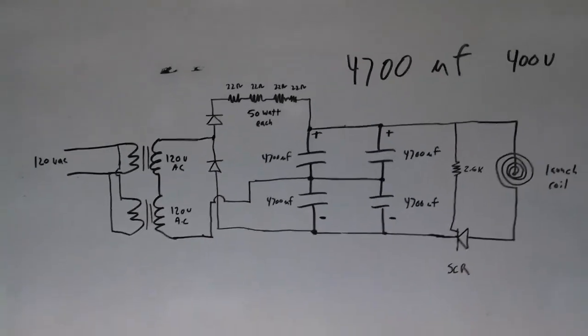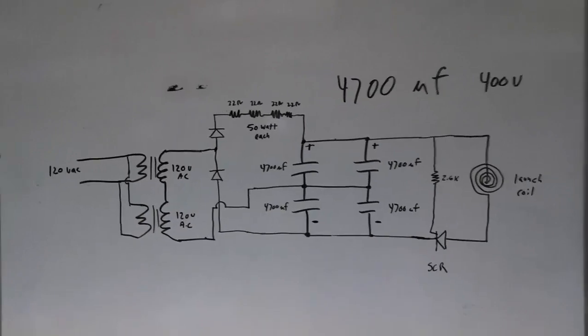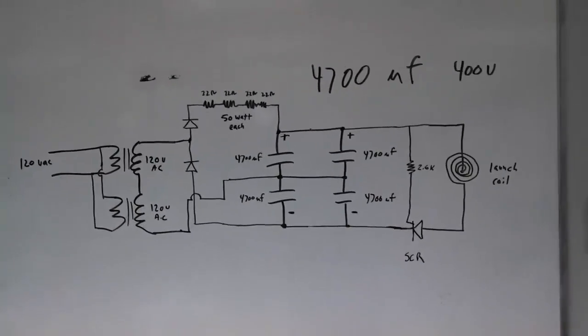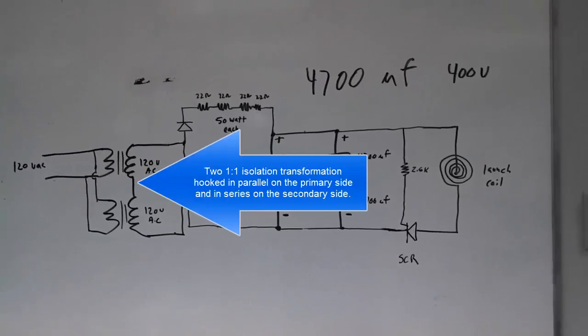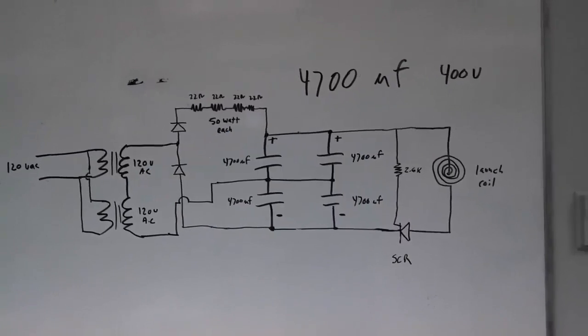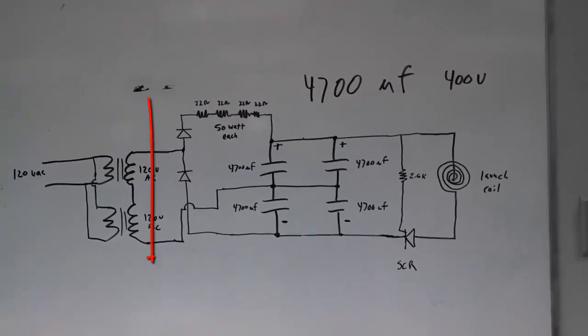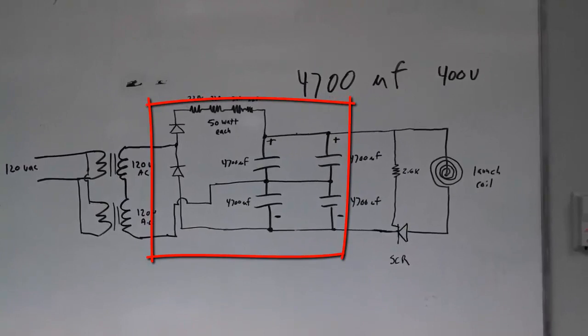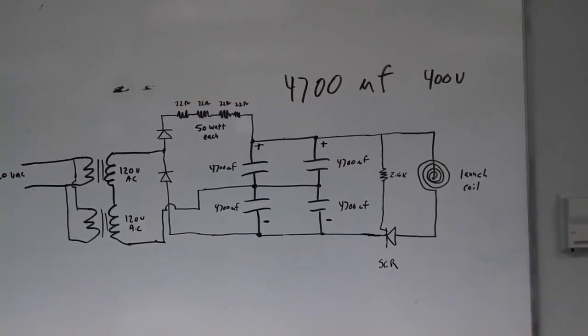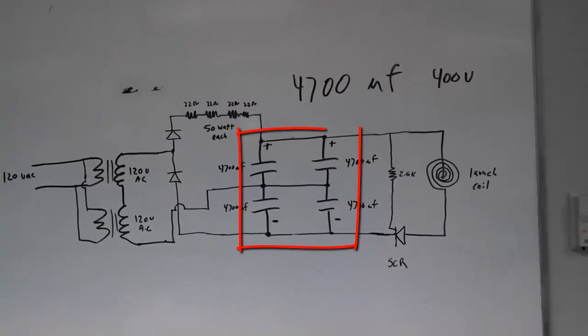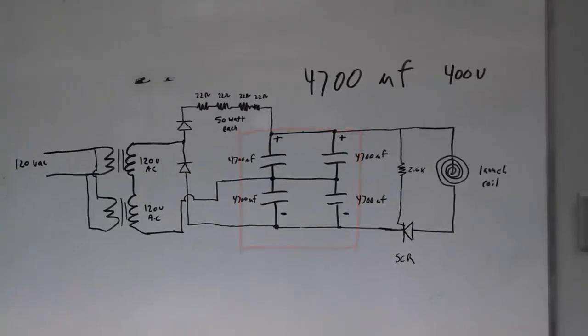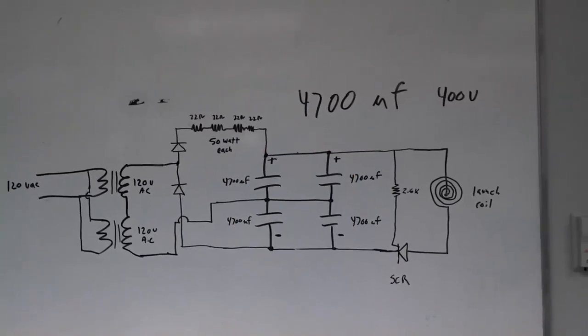So we're using two transformers hooked in parallel to 120 and those two transformers on the secondary side are hooked in series. So that gives us twice the available voltage from each transformer. And we feed that into a voltage doubler, which consists of a couple of diodes and the capacitors. Now the capacitors are hooked in a series parallel combination that gives us the same capacitance as one capacitor. We put them in this arrangement so that we would get more voltage available from the capacitor bank.